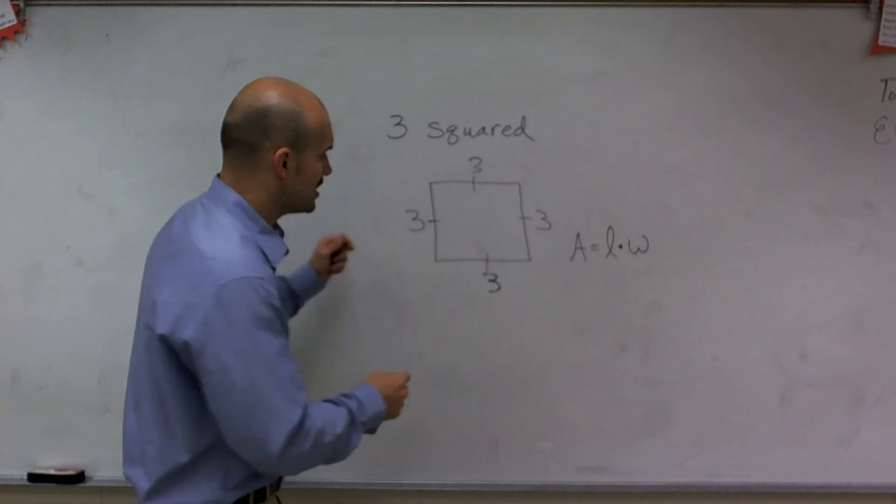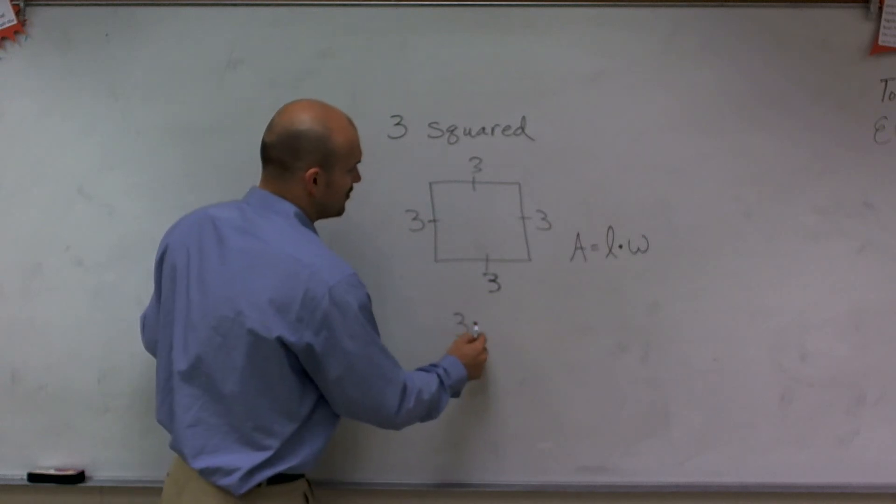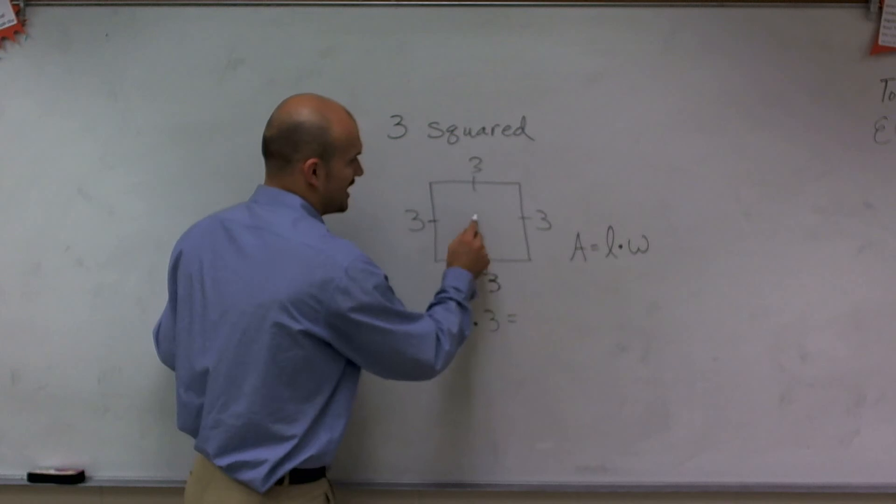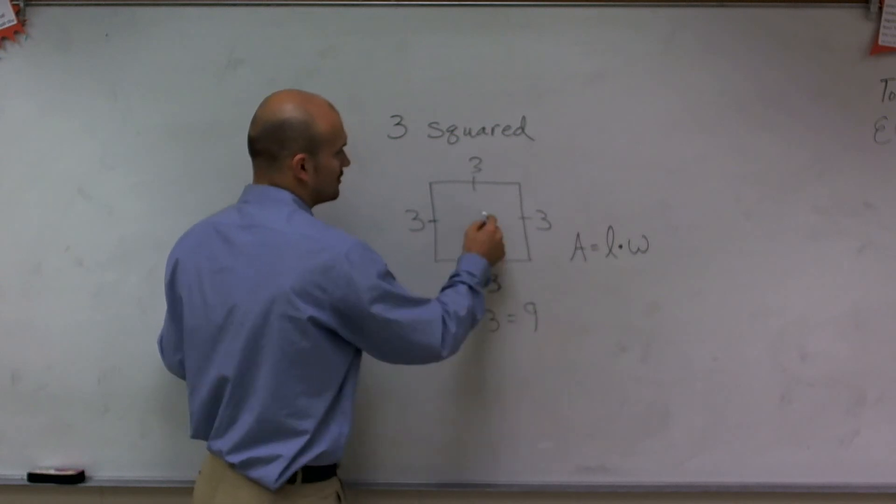So since you're dealing with a square, you're taking 3 and multiplying it by itself to get the answer, which will be 9.